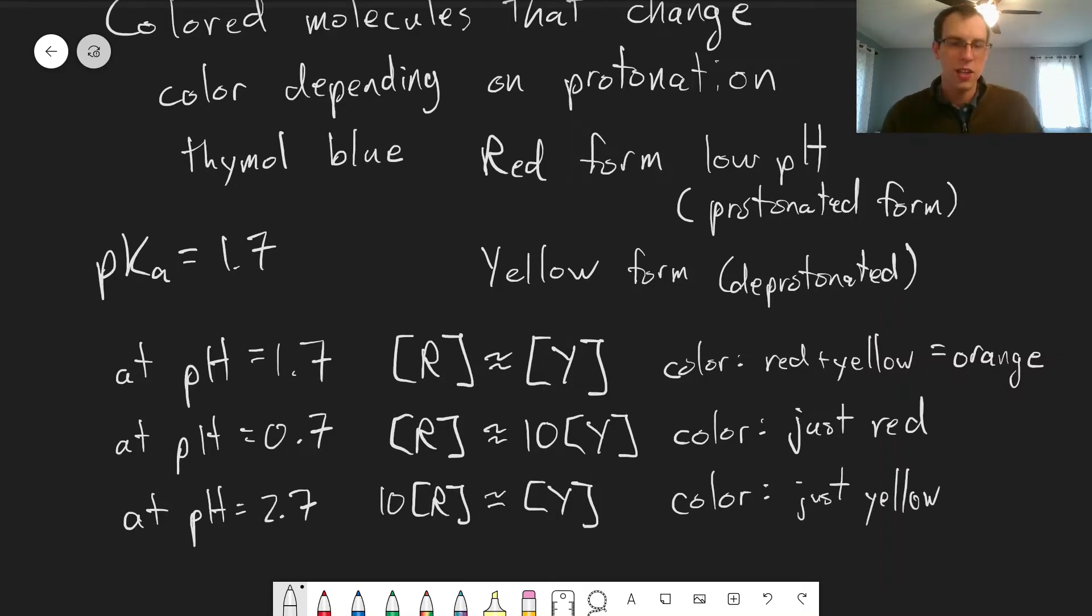So we can see this change going from, say, coming from higher pH, it'll be yellow. And as you continue to add acid, it'll change to orange right at pH 1.7 and then continue on to being just red.